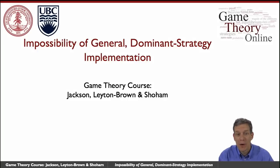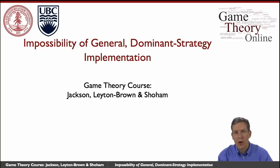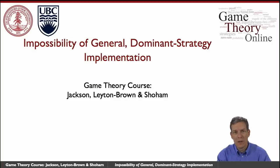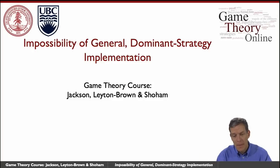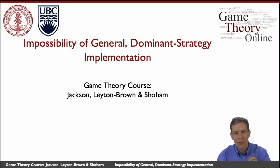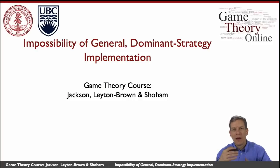Hi folks, it's Matt again, and we're going to talk now about dominant strategy implementation. The idea is we have a society, we have to make a decision, and we're trying to design a mechanism that takes people's preferences and gives us outcomes. We want to design a mechanism so that people want to tell us truthfully exactly what their preference rankings are over the alternatives, and they don't gain at all by trying to manipulate the system.